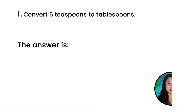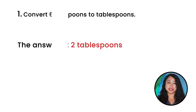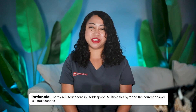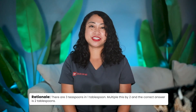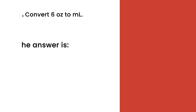Let's practice together and see how many you get correct. Question 1: Convert 6 teaspoons to tablespoons. The correct answer is 2 tablespoons. Rationale: there are 3 teaspoons in 1 tablespoon, so multiply by 2 to get 2 tablespoons.